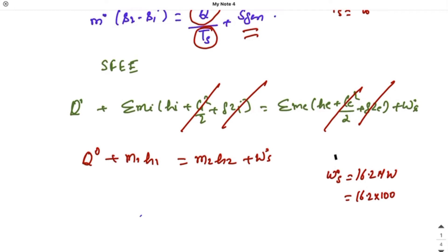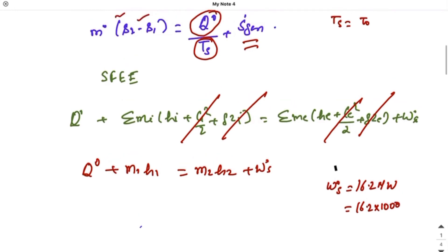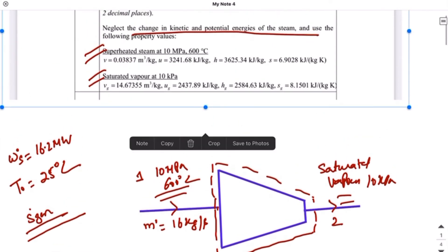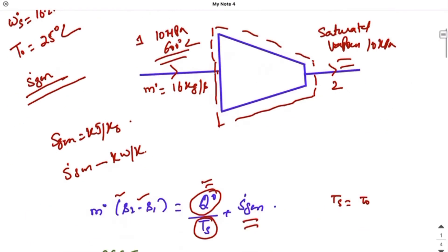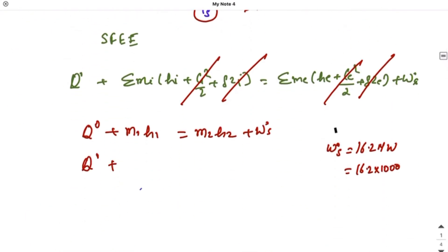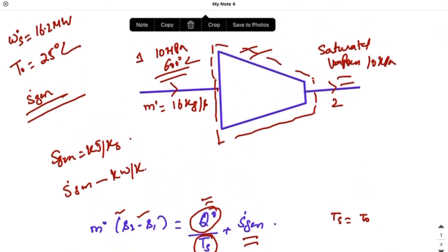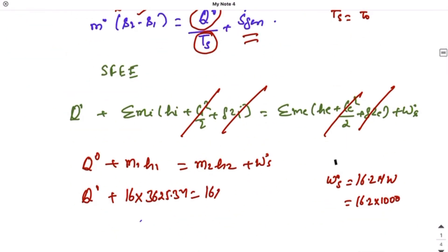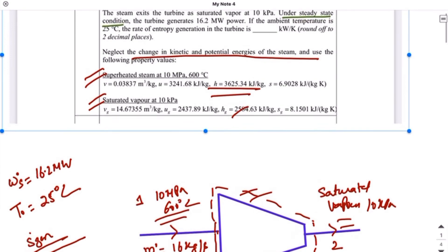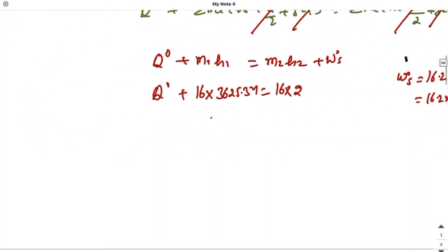Now h1 can be taken from this table. Since the turbine is under superheated condition, I can write h as 3625.34. So q dot plus m1 is 16 times 3625.34. m1 is equal to m2 if you apply mass balance across this control volume, so this is 16. Now h2 is 2584.63. This question is quite simple because they have directly given the value of s2 as sg, so you need not to worry about sg and sf. Plus 16,200. So solving this equation, we get q dot as minus 451.36 kilowatt.